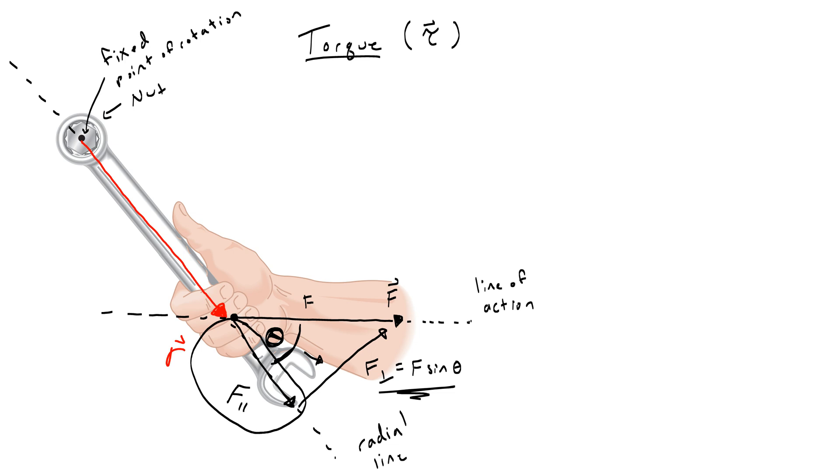Let's talk about the equation for F parallel and why we don't need it. This force is trying to pull the nut down and to the right, but the nut is fixed. Therefore, there's going to be some tension or force coming from the bolt that doesn't let it move. So we don't really need to know its equation because it's going to get canceled out. Instead, we focus on this perpendicular component of force, which is going to cause the nut and the wrench to rotate in a counterclockwise direction.